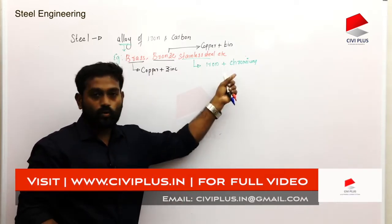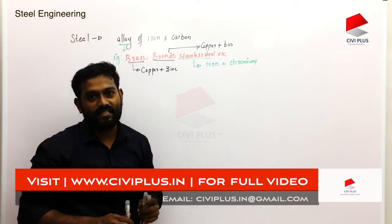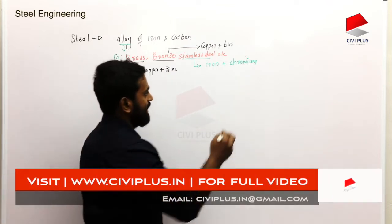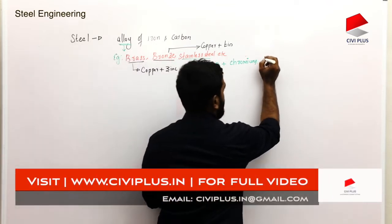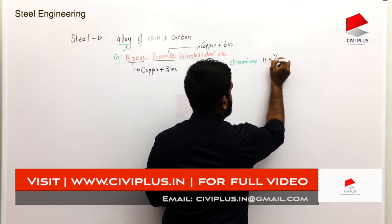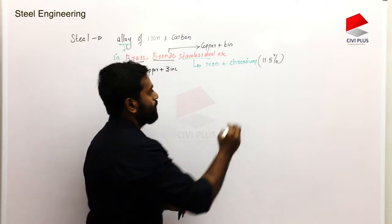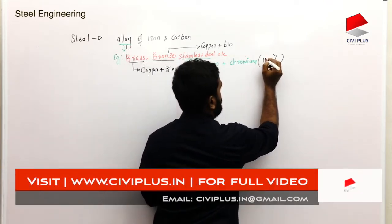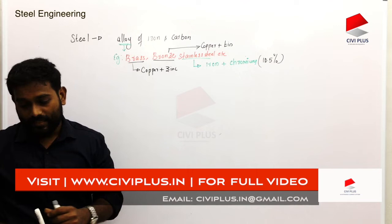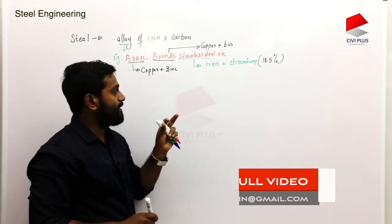This is the control. The minimum amount of chromium we add is 10.5% chromium.